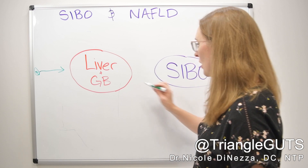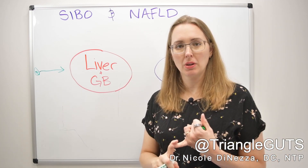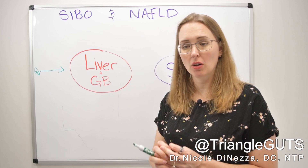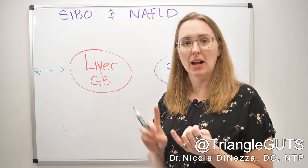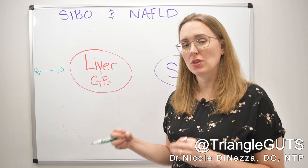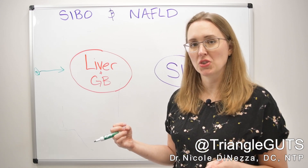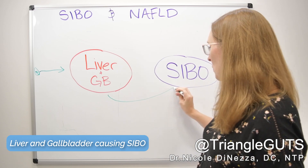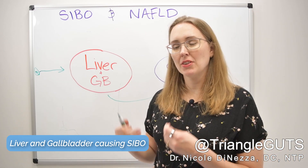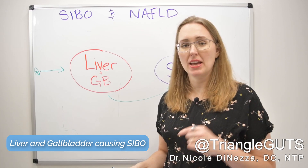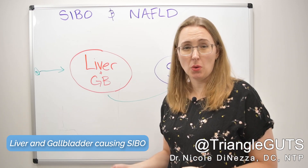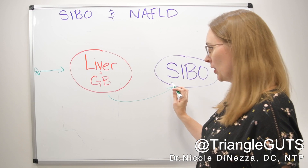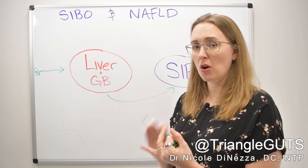The liver produces bile, sends it down to the gallbladder, which concentrates it and holds it until you need that concentrated squirt — primarily when you eat a fatty meal. You also need bile and gallbladder emptying to promote MMC waves and proper motility. So if your liver or gallbladder is compromised, or if your bile flow is really sluggish, that will directly lead to SIBO because it's going to disrupt your motility. Remember also that bile is an antimicrobial — so bile is very important both to promote motility and as an antimicrobial.